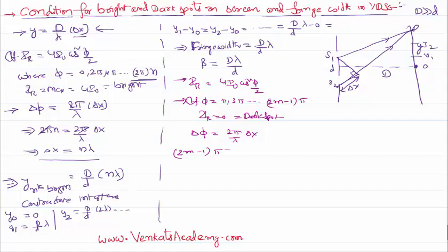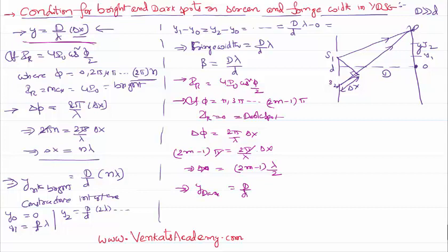So delta φ = (2m−1)π = (2π/λ) · delta x. The π cancels, so the path difference delta x = (2m−1)λ/2. Substituting into the relation for y, we can write y_dark = (capital D / small d) · (2m−1)λ/2, where m is 1 onwards, for destructive interference.